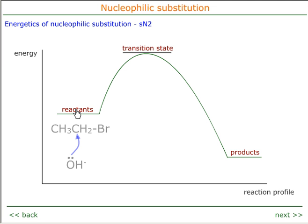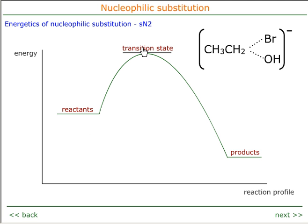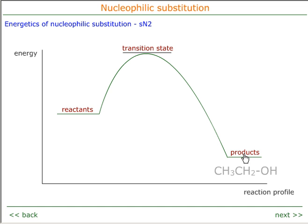We can look at this in terms of an energy graph. The reactants are the hydroxide ion nucleophile and the haloalkane. The activation energy is the energy required to reach the transition state, where both the hydroxyl group and the halogen are still attached to the same carbon. Once that transition state is formed, the reaction rapidly proceeds to give the product, the alcohol.